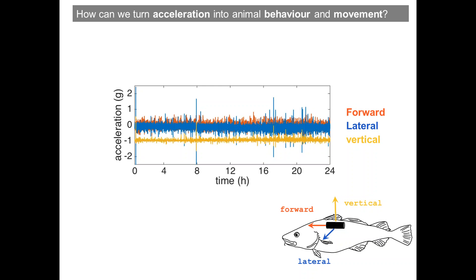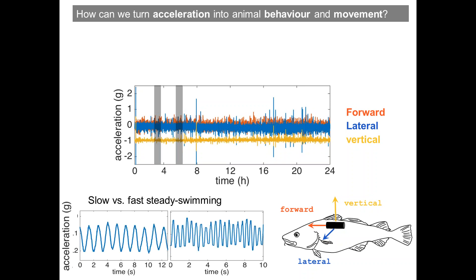Luckily, in the 60s and 70s, people did video analysis of fish movement and related that to acceleration records. We already know that fish swimming is well described as a sinusoidal wave, with frequency corresponding to the tailbeat frequency of the animal. Here I'm showing a time series of acceleration during slow swimming versus fast swimming. You can see the frequency during fast swimming is much higher than during slow swimming, so you can relate these signals to activity as well as a proxy for energy expenditure.